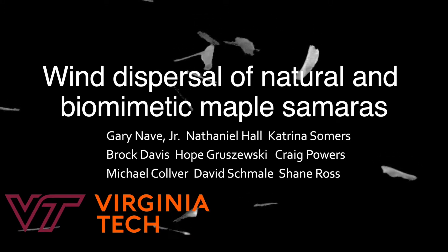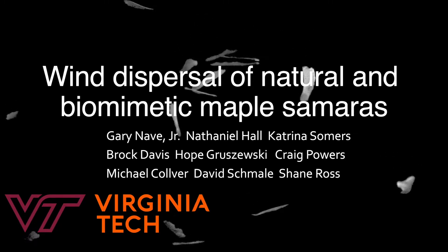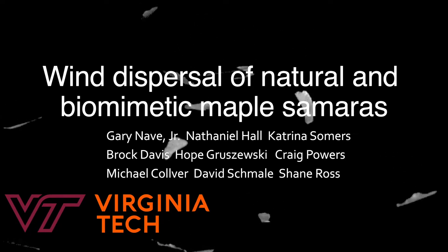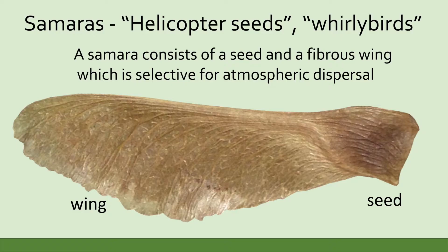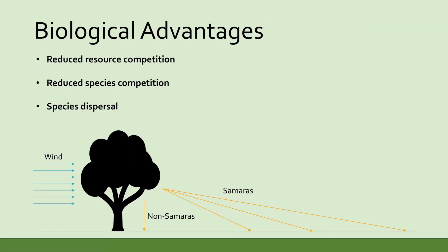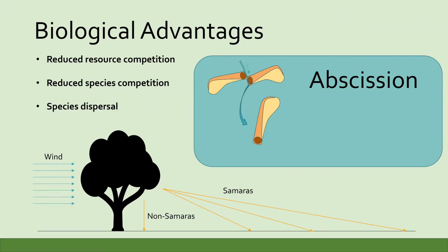The fruit of maple trees produce wind-dispersed seeds known as samaras. A samara consists of a seed and a single fibrous wing. After abscission, the samara, after falling from rest,